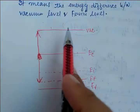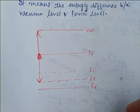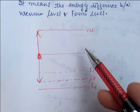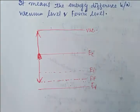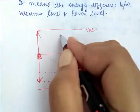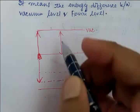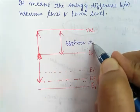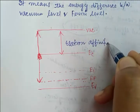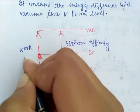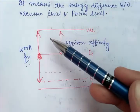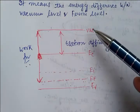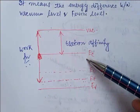If we consider the vacuum level, there is an important parameter: the distance between the vacuum and the conduction band is known as electron affinity. So work function is the distance between your vacuum and the Fermi level, while electron affinity is the distance between your vacuum and the conduction band.